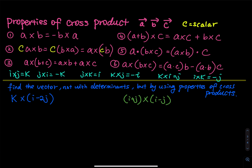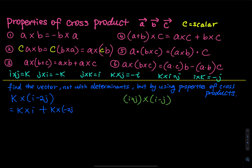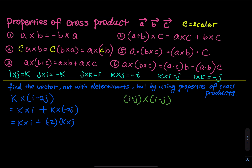Let's do some quick exercises — finding a vector using properties of cross product, not determinants. The first one: vector k cross (i minus 2j). The first thing we do is distribution. So we have k cross i, and then plus k cross negative 2j. Then I take the negative 2 out and get k cross j. This is by property number 3.